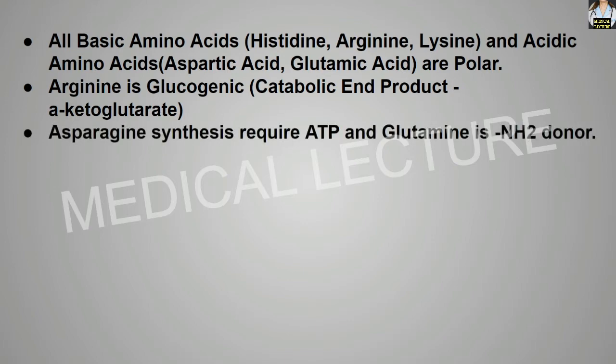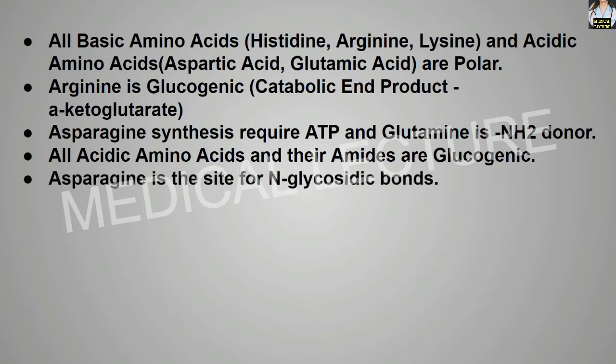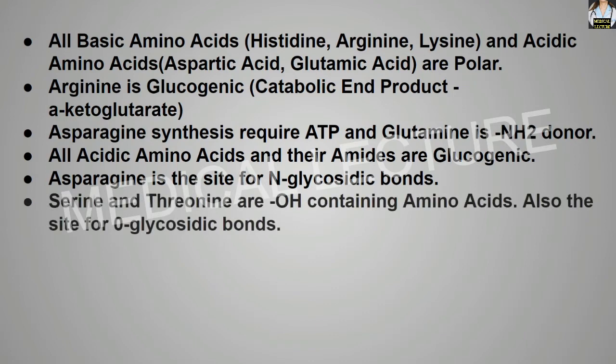Asparagine synthesis requires ATP and glutamine is the amino group donor. All acidic amino acids and their amides are glucogenic. Asparagine is the site for N-glycosidic bonds. Serine and threonine are the hydroxy-containing amino acids and are also the site for O-glycosidic bonds.